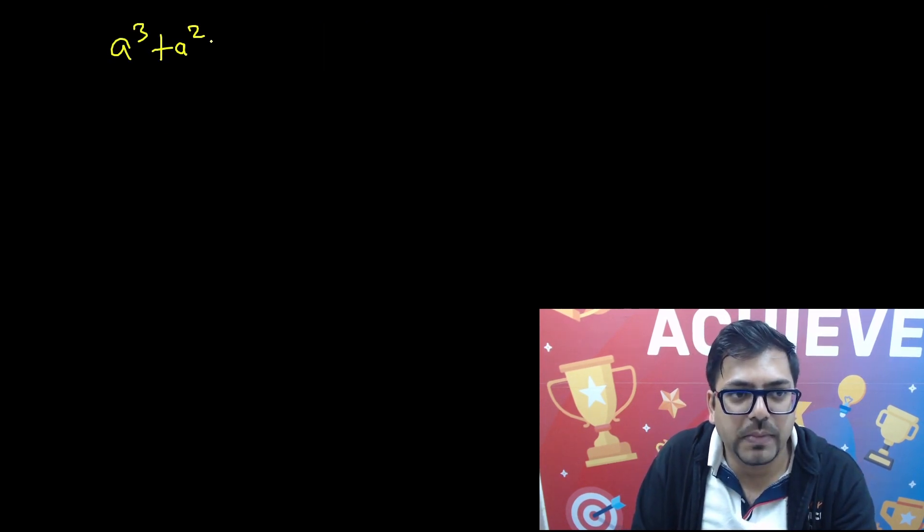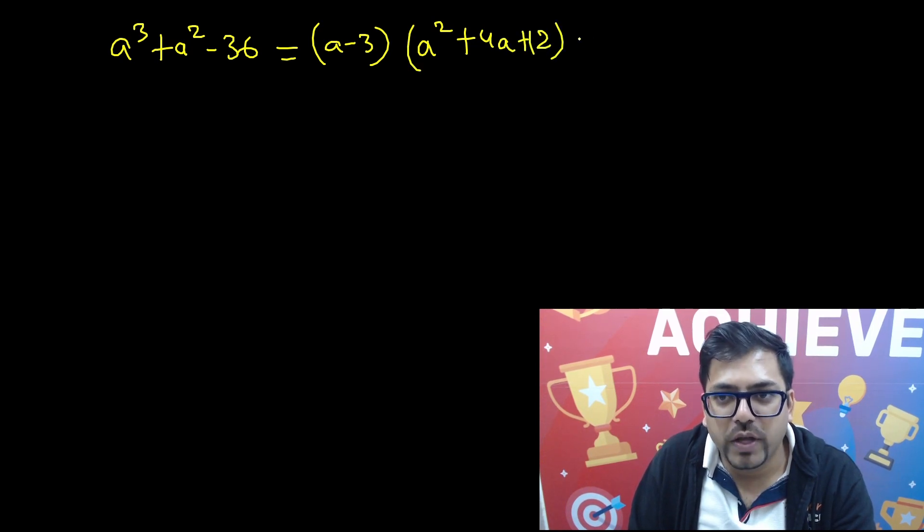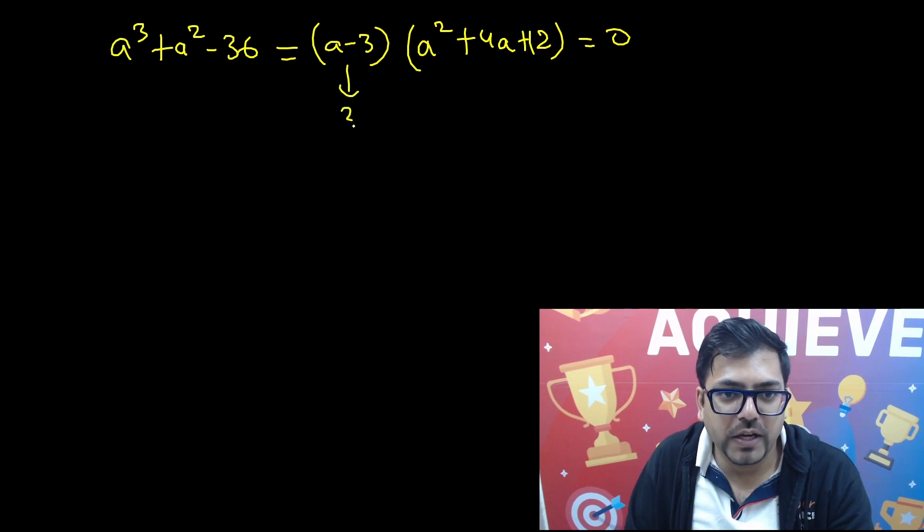So finally the same equation a³ + a² - 36 can be written as (a - 3)(a² + 4a + 12) = 0. Now the thing is, we have factorized it. From here very easily we get the answer 3. From here, are we going to get some answer or not? Again depends.